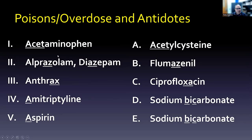Let's start with the A's. Acetaminophen's antidote is acetylcysteine — you can use the 'acet' at the very beginning of both of those. Alprazolam and diazepam have flumazenil as their antidote. You can use the A's in alprazolam, the A's in azepam, and more generally the stems azolam and azepam for all the benzodiazepines. Flumazenil is the antidote there.